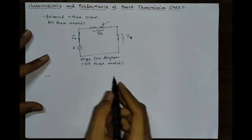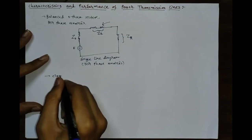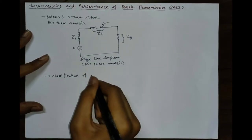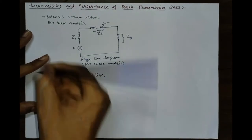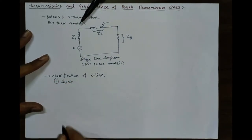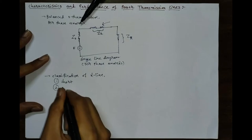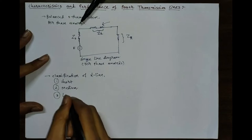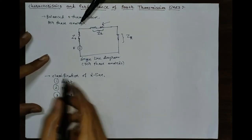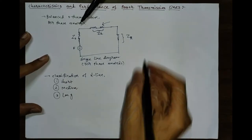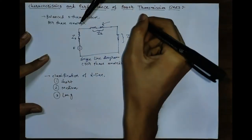The value of ZL will be different in case of the different classifications of your transmission line. Generally, your power system transmission line can be classified in three ways: the first is the short transmission line, the second is the medium transmission line, and the third is the long transmission line.